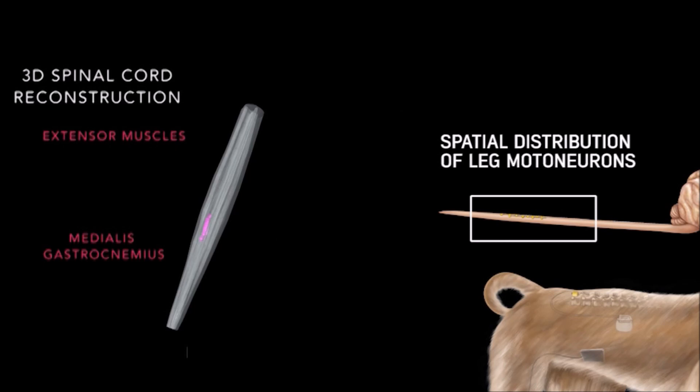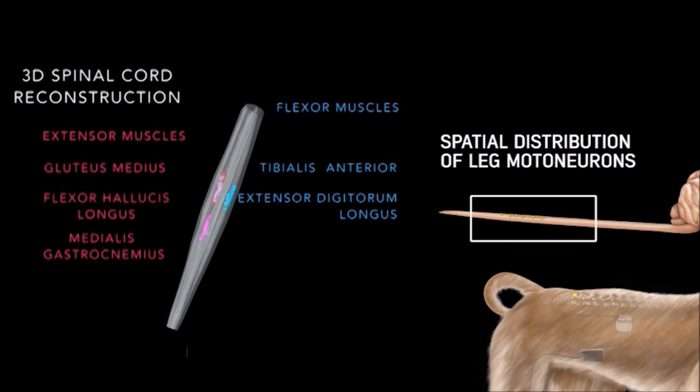For this, we reconstructed the anatomical location of motor neurons innervating the extensor, flexor, and biarticular muscles of the leg.